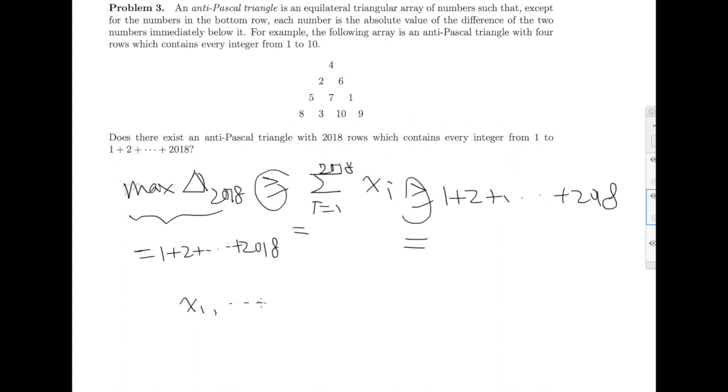So necessarily all these inequalities must be equalities equal to 1 plus 2 plus 2018. In other words, the numbers x_1 to x_2018 must equal 1 plus 2 plus 2018. The order might not be exactly 1, 2, 3, 4, 5, but the set of these numbers must equal the set of 1 to 2018.